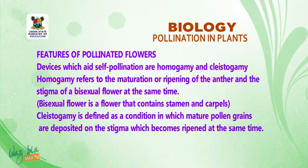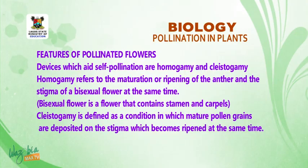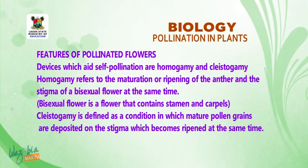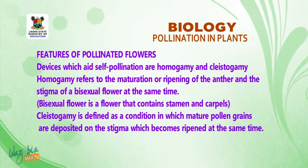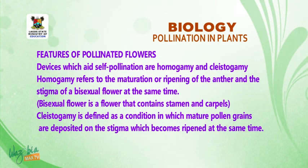Now we go to discussion on features of pollinated flowers. Devices associated with self-pollination are homogamy and cleistogamy. Homogamy refers to the maturation or ripening of the anthers and the stigmas of a bisexual flower at the same time.